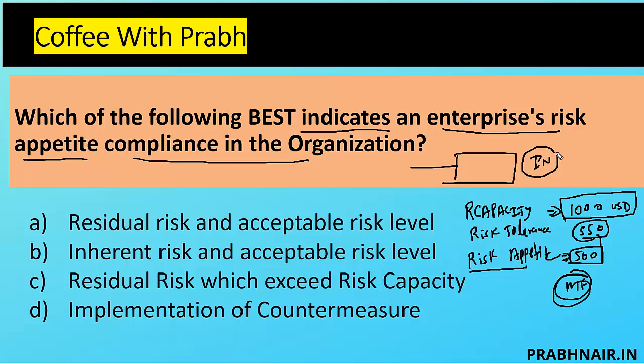Inherent risk is the risk which is basically in the system without any treatment. Residual risk is the risk which remains after treatment. As an auditor, seeing so many transactions I know I can't audit every one, so I ignore some — that's my inherent risk. But after applying sampling or control I limit those transactions and focus on a reduced set. The risk left after implementing control is the residual risk.